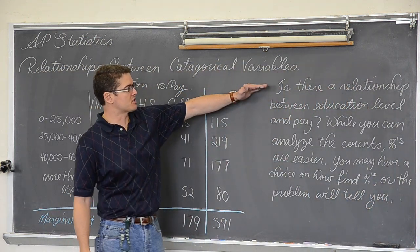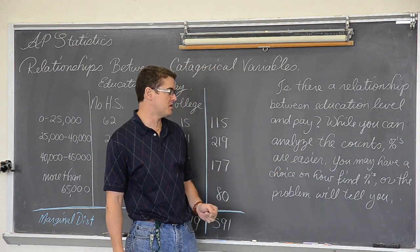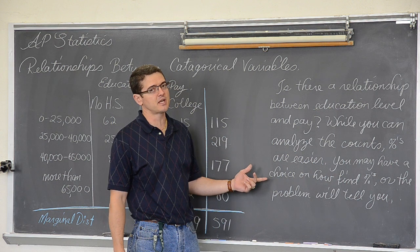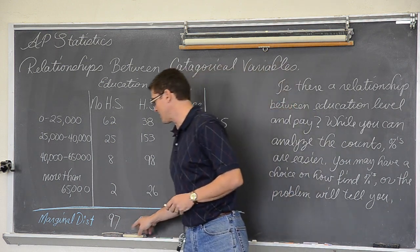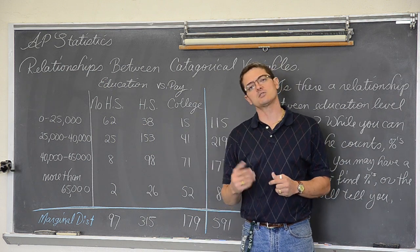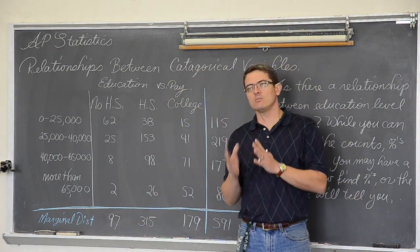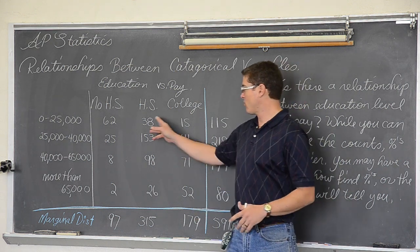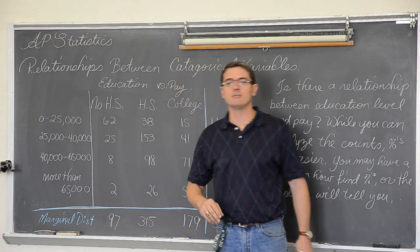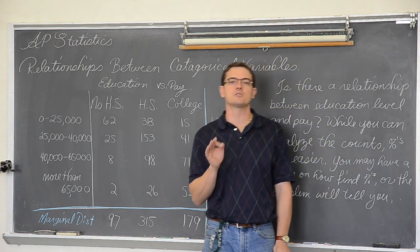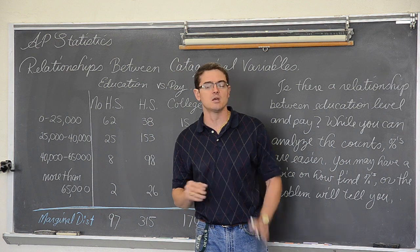What we are going to do is ask is there a relationship between those two. Hopefully if we are in college and taking honor classes we are hoping that of course there is. While you can analyze the counts, percents are easier and you may have a choice in how to set up those percents, but usually it will be dictated to you in the problem based on the variables or the language of the questions. Now why would we not want to just look at this table of counts and go, well clearly the more school you have the more you make. And we probably can, but these totals are not equal. So we might feel like there is something going on there that there really isn't simply because we are looking at these numbers but we are missing the fact that this is 153 out of 315.